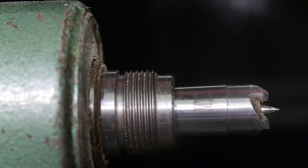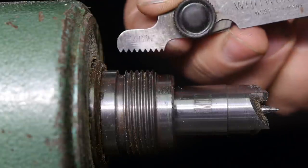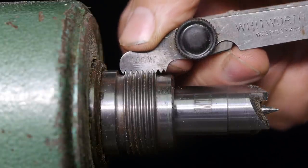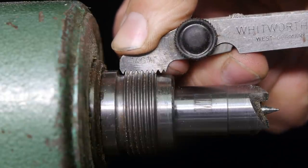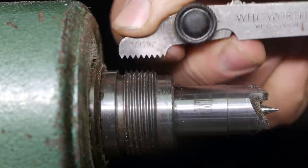The thread on the spindle nose is 14 TPI and that's a bit strange to see Imperial thread on a European lathe that isn't that old.